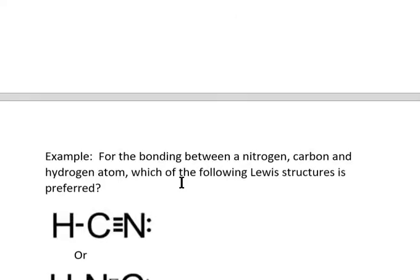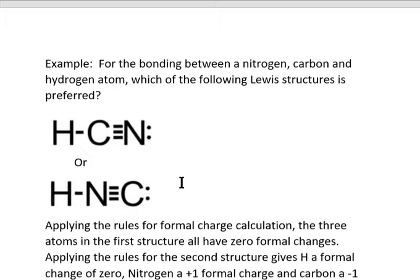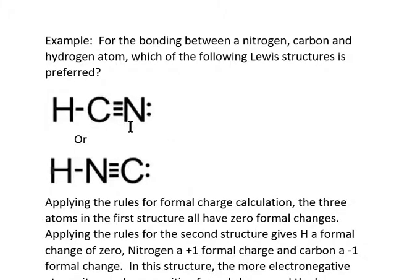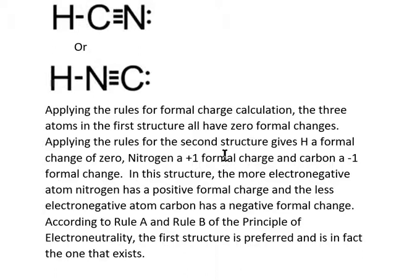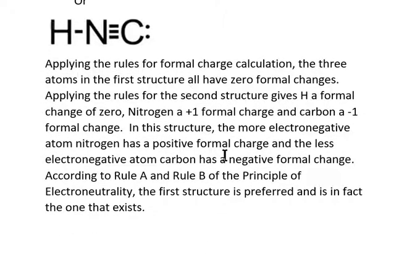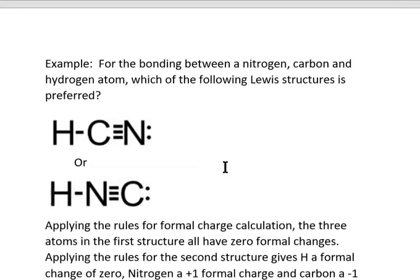Let's take as an example HCN — carbon, nitrogen, and hydrogen forming hydrogen cyanide. It could be HCN or HNC, and we can write proper Lewis structures of both types. Applying the rules of formal charge to the first structure, all three atoms will have zero formal charges.